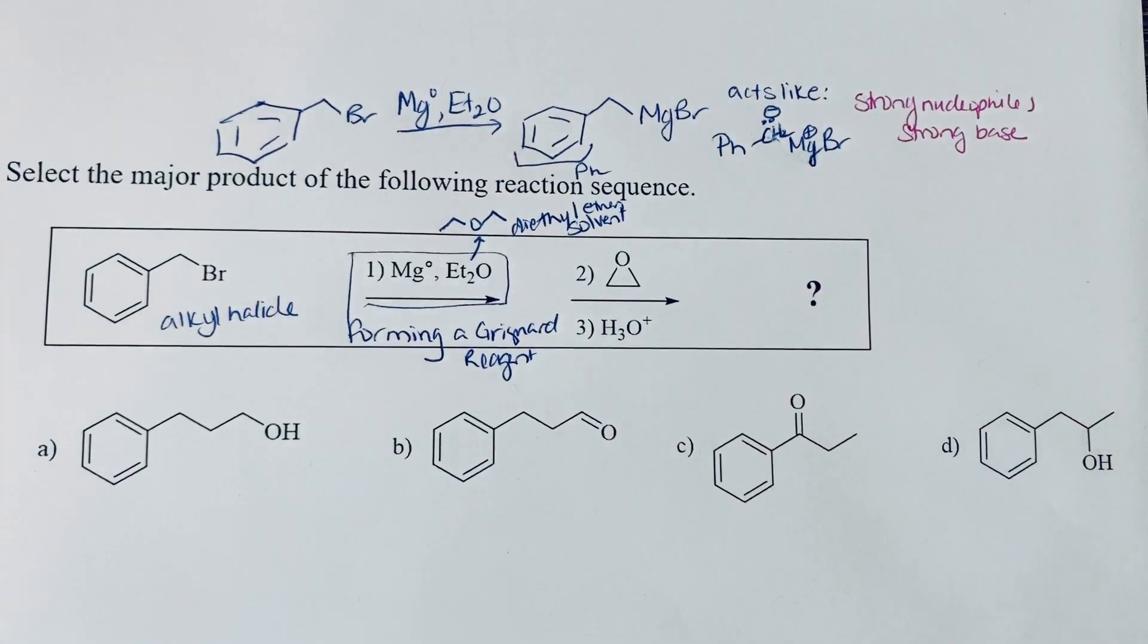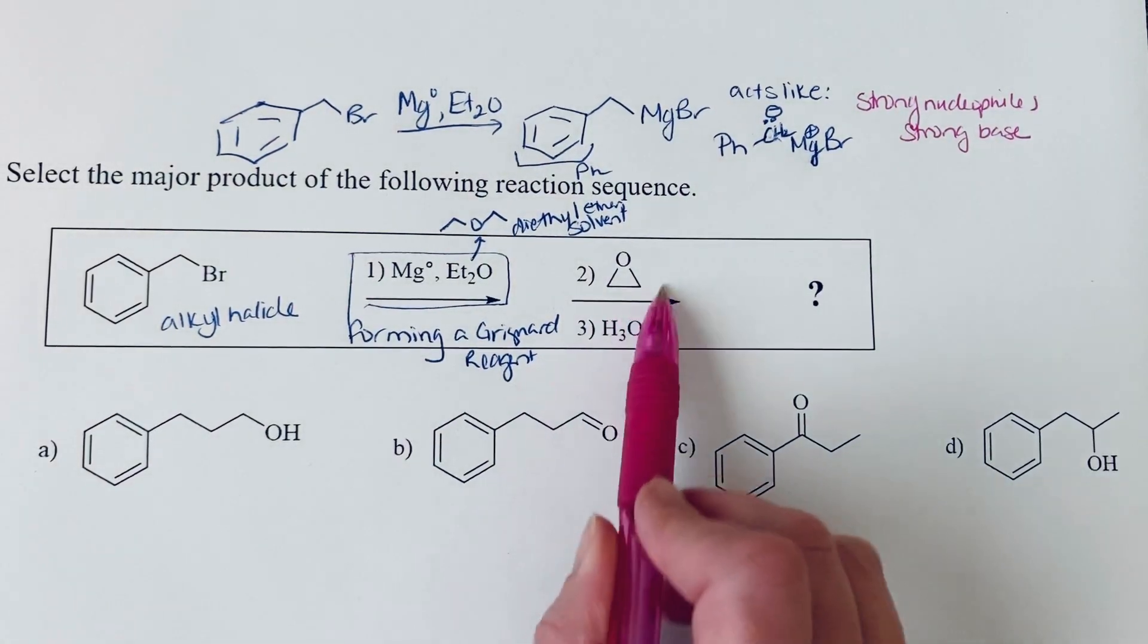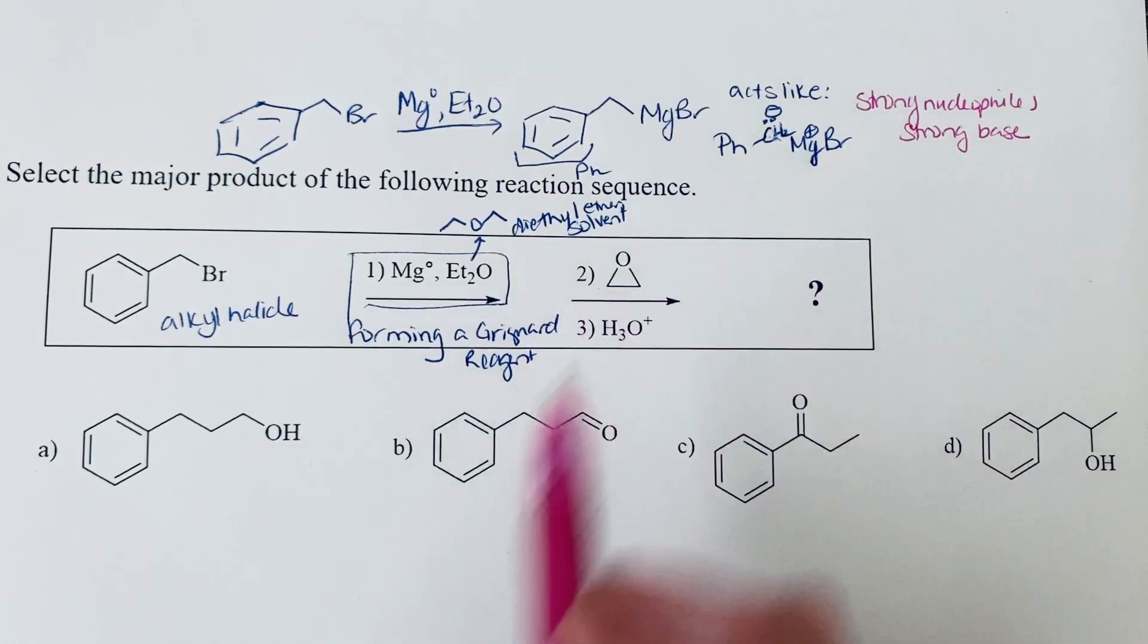So like alkyl lithium reagents, this would react with acidic hydrogens, or it could react with an electrophilic carbon. And that's what we have when we have an epoxide, because of the ring strain, both carbon atoms of that epoxide are very electrophilic.